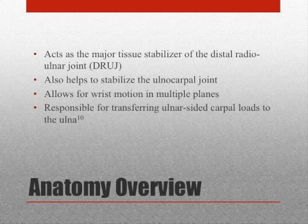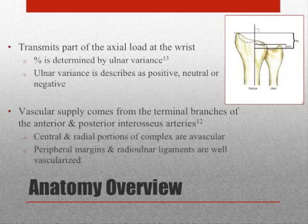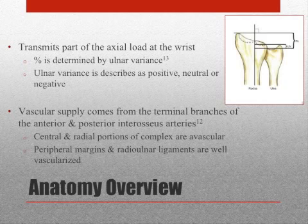The TFCC is responsible for transferring ulnar-sided carpal loads to the ulna, and for transmitting part of the axial load at the wrist. The percentage of this load transferred is determined by the ulnar variance one has. Ulnar variance is described as positive, neutral, or negative.